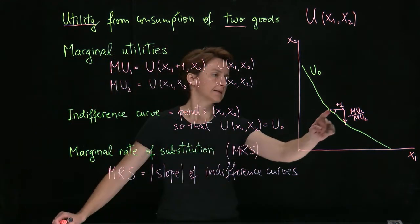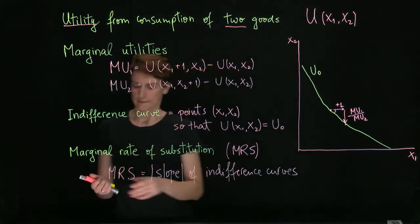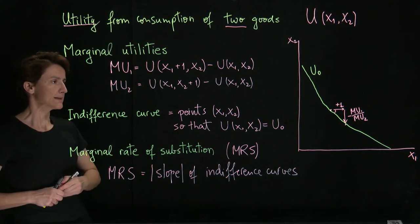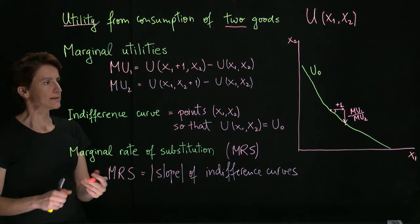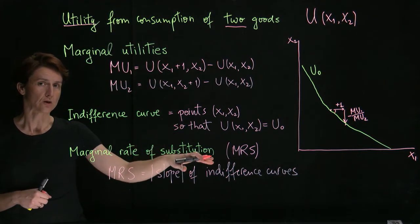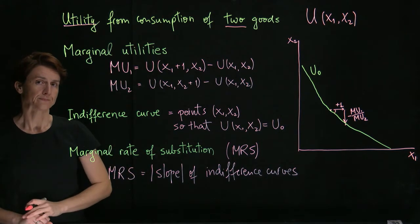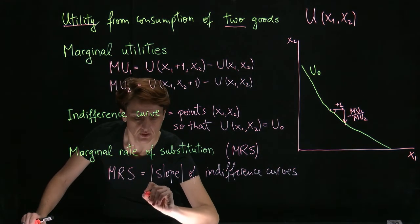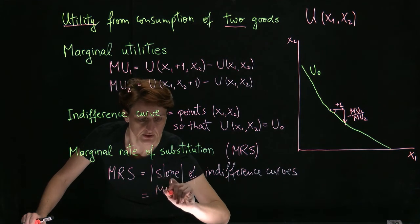And you can see that's exactly the thought process we had here. So MRS, in other words, is a measure of the value of good 1 in units of good 2. We could also say that it equals the ratio of marginal utilities.